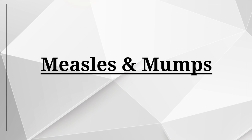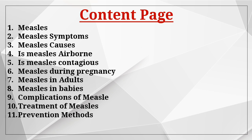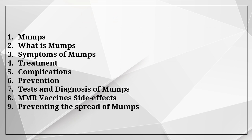The topic is measles and mumps. We will cover: measles symptoms, causes, airborne transmission, contagiousness, measles during pregnancy, in adults, in babies, complications, treatment and prevention. For mumps: what is mumps, symptoms, treatment, complications, prevention, test and diagnosis, MMR vaccine side effects, and preventing the spread of mumps.